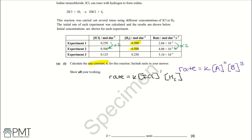Now we've worked out the order with respect to ICl, we can work out the order with respect to H2. We don't have an experiment where ICl stays constant, but we know ICl is first order. Looking at experiments two to three, ICl is divided by four and H2 is divided by two, and the rate is divided by eight. We can use this information to work out the order with respect to H2.